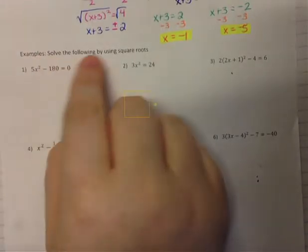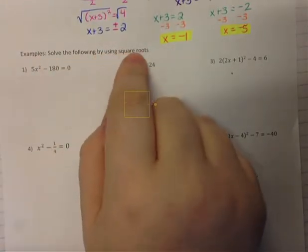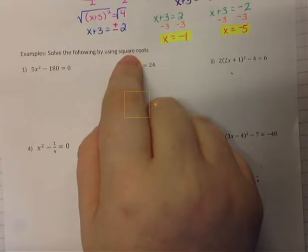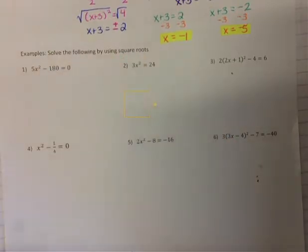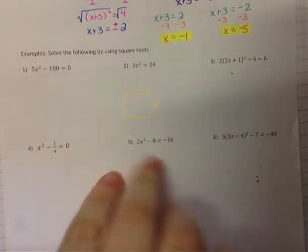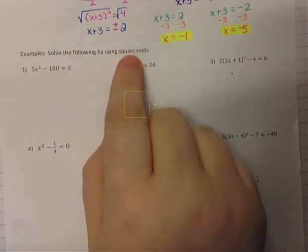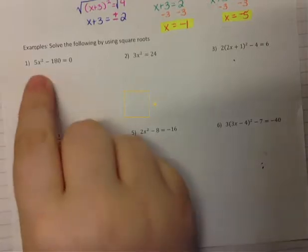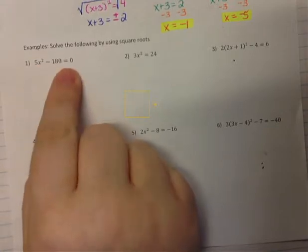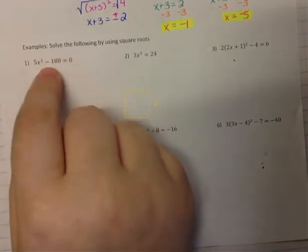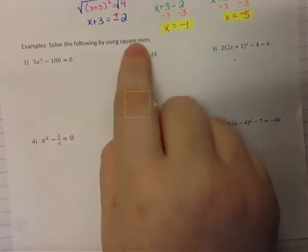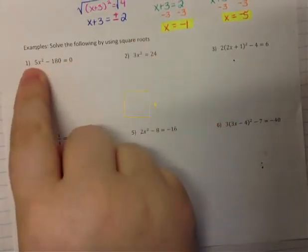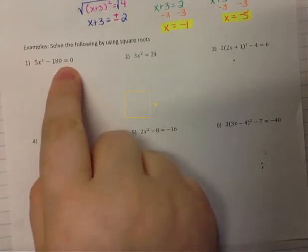The directions say to solve the following by using square roots. Because it says square roots, I must use this method. Some of these are factorable, which means I could solve them by factoring, but because it says solve by using square roots, I specifically want to use square roots. You can use solve by square roots when there's only one x in the problem. I want to use square roots, which means I'm just going to solve this equation as a normal equation.